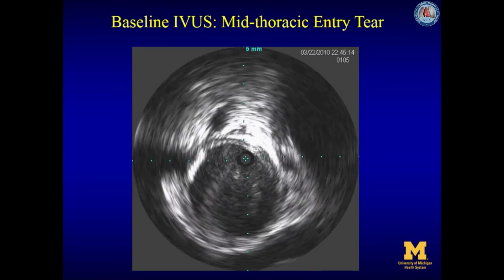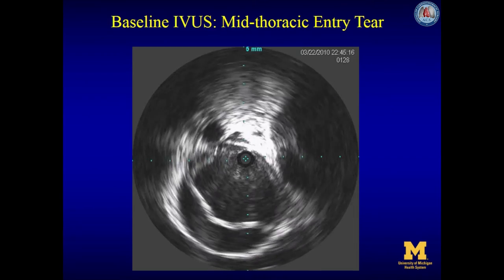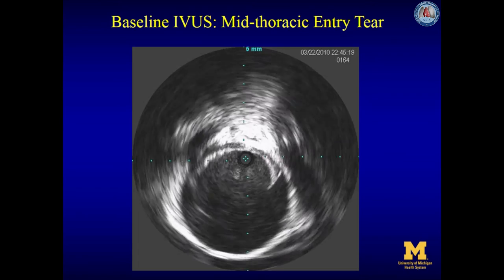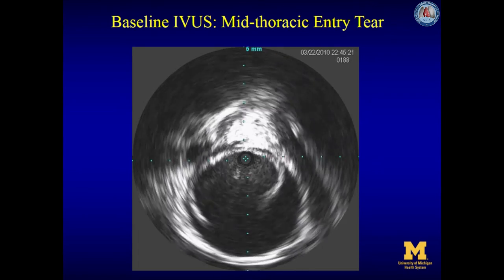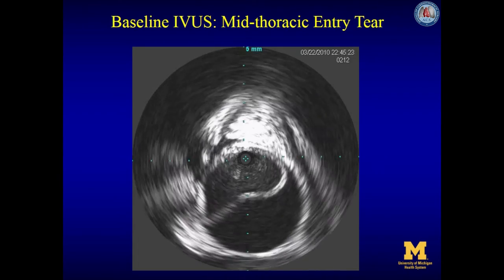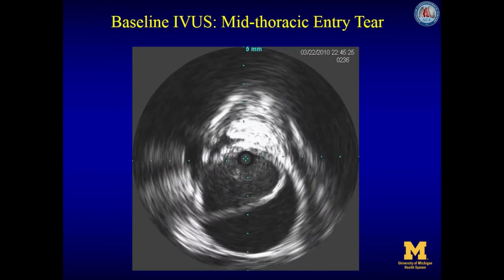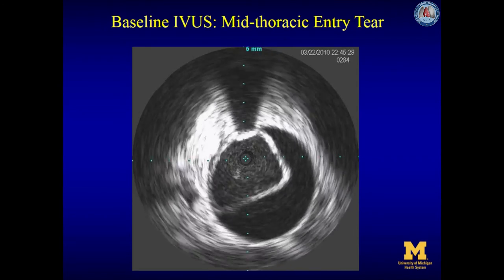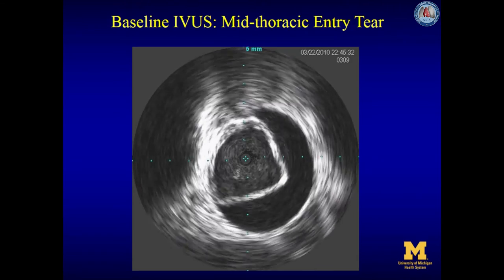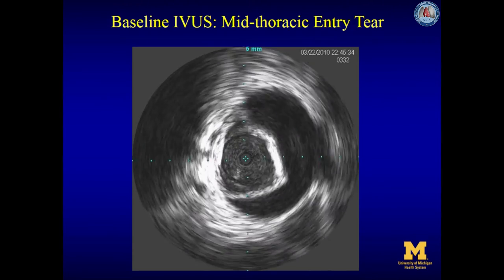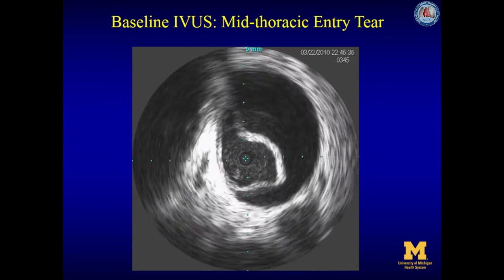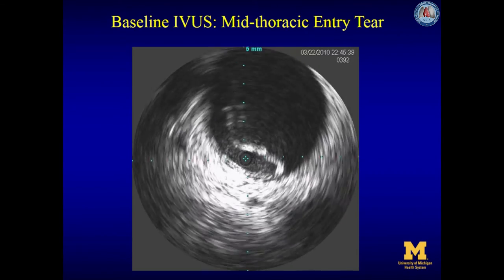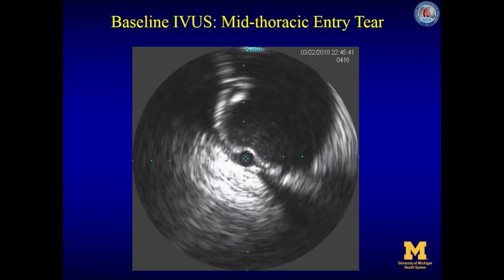This is an IVUS of the thoracic aorta above the dissection — we see just the beginning of the dissection between 5 and 9 o'clock, with the entry tear flapping. Now we are below the entry tear in the distal thoracic aorta approaching the diaphragm. At this point, the true lumen is becoming increasingly collapsed and is almost completely collapsed as we approach the visceral vessels.